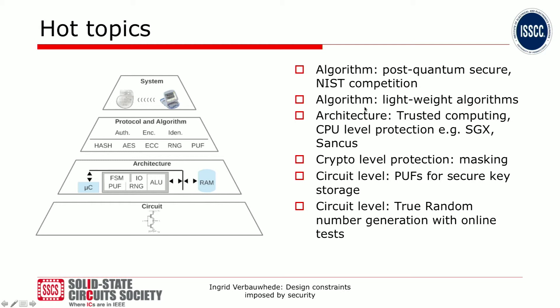At architecture level, a hot topic is adding trust to your computation — making sure implementations have a secure or trusted component. Examples are the Intel SGX approach or the Sancus approach from KU Leuven. At the crypto protection level, we see a lot of work on masking techniques to make implementations side channel secure. At circuit level, there's a lot of research going on into PUFs for secure key storage and random number generators, including online tests, because these circuits also need protection against manipulation.